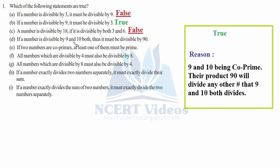Statement D: if a number is divisible by both nine and ten, then it must be divisible by ninety. This is true. The reason is nine and ten are co-prime, so their product 90 will divide any number divisible by both. Co-prime means the numbers have a common factor of only one.